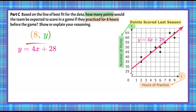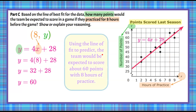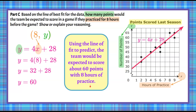For a more exact answer, we'll use the equation of the line of best fit. Substituting X equals 8: Y equals 4 times 8 plus 28. Four times 8 is 32, and 32 plus 28 is 60. So with 8 hours of practice and 60 points scored, using our line of fit to predict, the team would be expected to score about 60 points with 8 hours of practice.